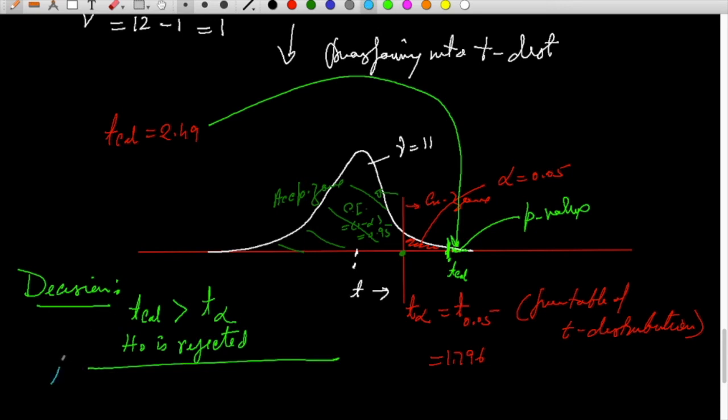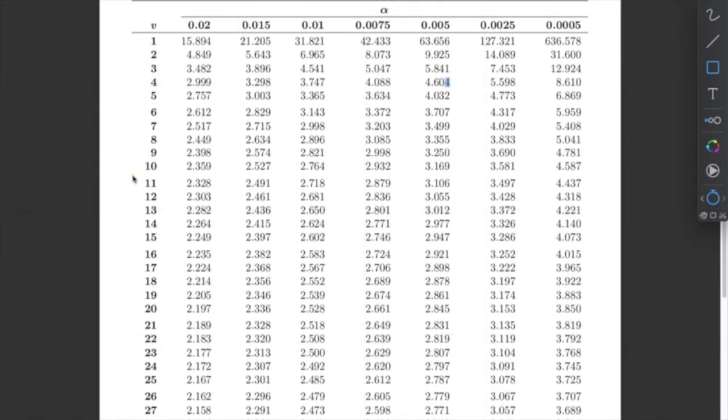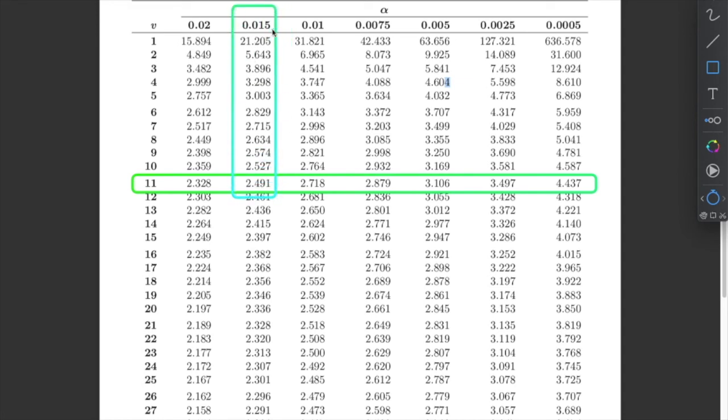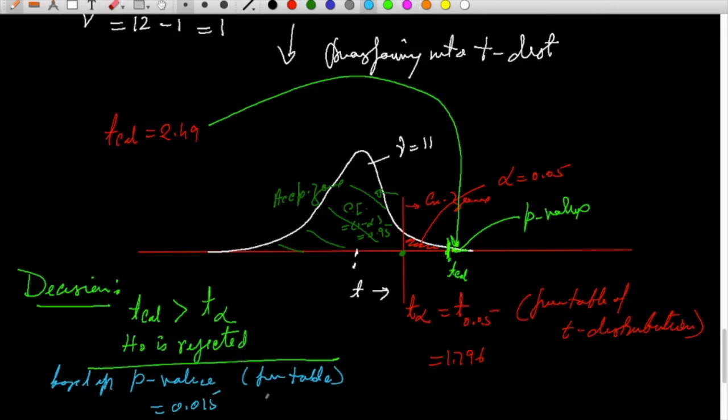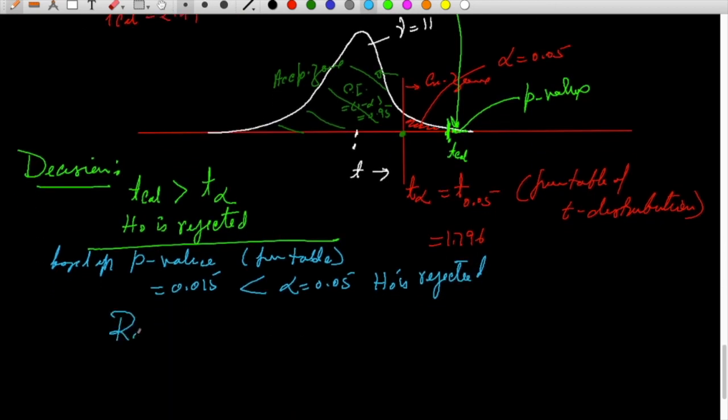If the decision is to be taken based on p-value, then we have to pick up p-value from the table for degrees of freedom 11. The value of alpha with respect to 2.49 is approximately 0.015. That will be called our p-value. So p-value is 0.015 with respect to t equals 2.49. P is 0.015, which is far less than alpha that is 0.05, means H-naught is rejected.